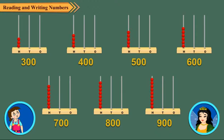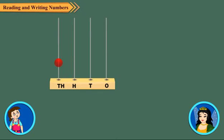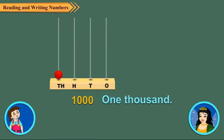As we can put a maximum of nine beads on a spike, so to represent ten hundreds, we insert one more spike on the left of hundreds rod. This rod is called thousands rod.